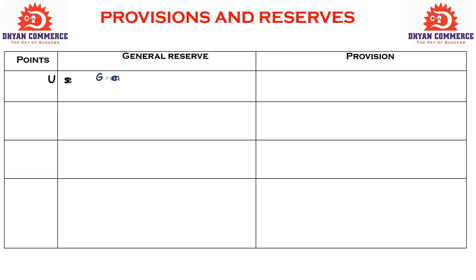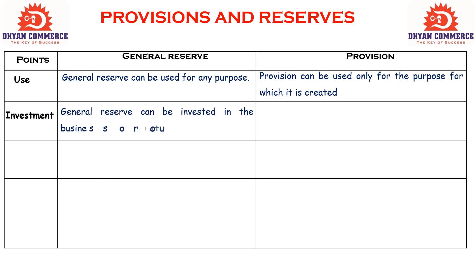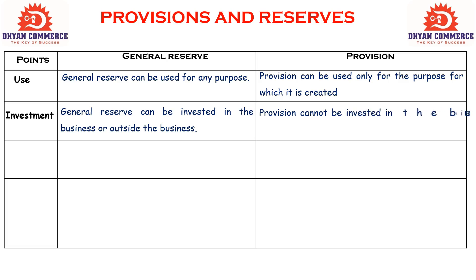Now we take the fourth point of General Reserve and Provision difference — Uses. General reserve can be used for any purpose; yaani general reserve ka koi bhi use kiya ja sakta hai, koi specific purpose nahi hai. Provision can be used only for the purpose for which it is created; yaani provision jo purpose ke liye create kiya gaya, usi ke liye use kiya jata hai — jaise provision for tax ka use tax ki value ke liye hoga. Regarding investment — general reserve can be invested in the business or outside the business. Provision cannot be invested in the business or outside the business, kyunki provision ki value fixed purpose ke liye hoti hai.